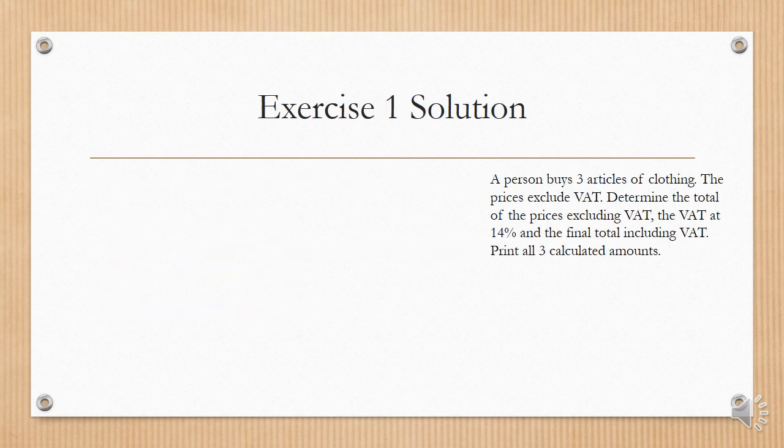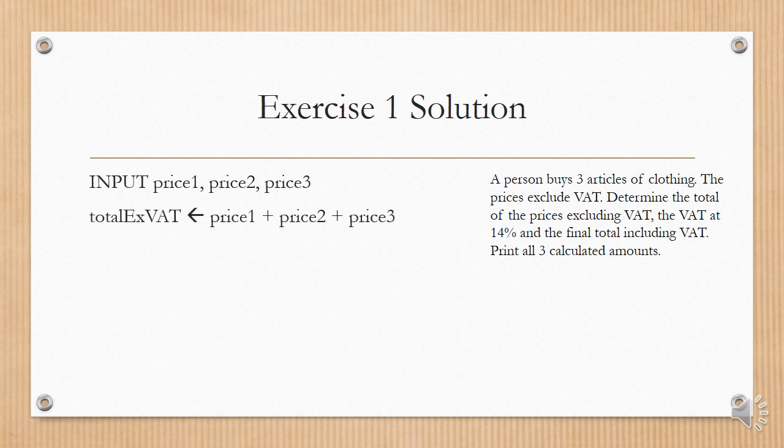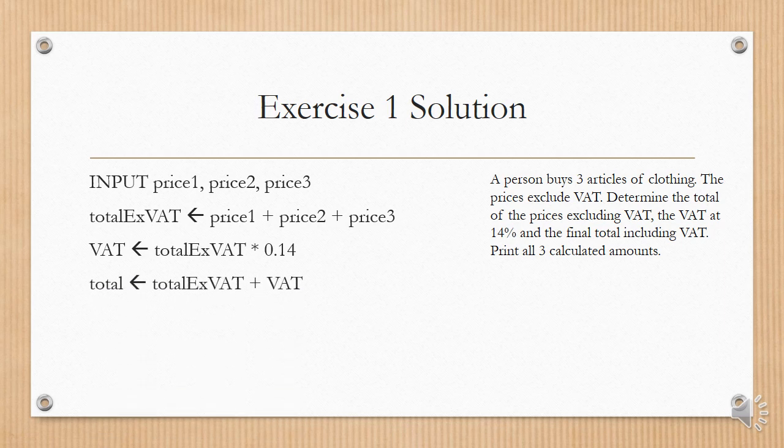Here's the solution. Input PRICE1, PRICE2, PRICE3. Then we work out the total excluding VAT, which will be PRICE1 plus PRICE2 plus PRICE3. Work out the VAT, which will be total excluding VAT times 0.14. Work out the total. It's set to total excluding VAT plus VAT.